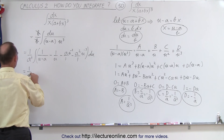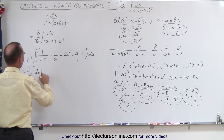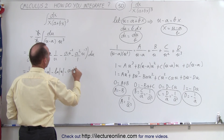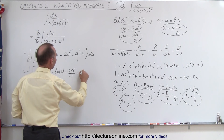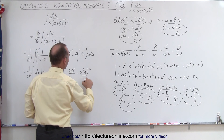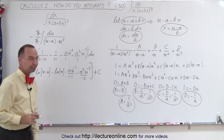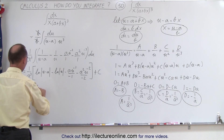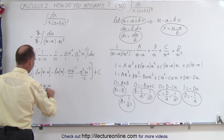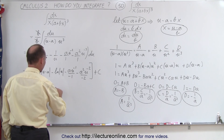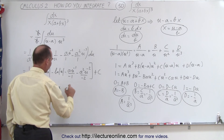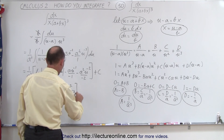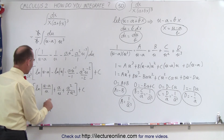Okay, let's go ahead and integrate now. We have 1 over a cubed times: the natural log of u minus a, minus the natural log of u, and here we have minus a times u to the minus 1 over negative 1, minus a squared times u to the minus 2 over negative 2, plus a constant of integration. Now, simplifying a little bit more, we can combine the two logarithms. This equals 1 over a cubed times the natural log of u minus a divided by u, and the negatives cancel out giving plus a over u, and plus a squared over 2u squared, plus a constant of integration.